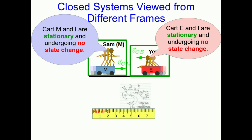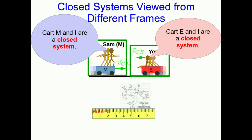Here are you and Sam again on your carts, moving at constant velocity relative to the earth, and here's Trogdor on his ruler C, also moving at some constant velocity relative to the earth. Now, as far as you are concerned, in your own frame, you are stationary. And assuming you're not jumping up and down on your cart, you're also undergoing no state change. All the same is true for Sam. And so you believe you are in a closed system — according to all your measurements, you're in a closed system, and the same goes for Sam.